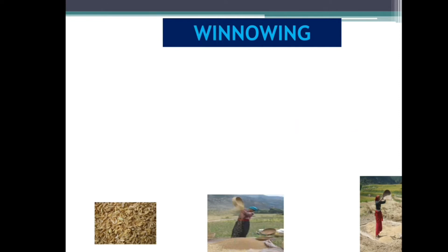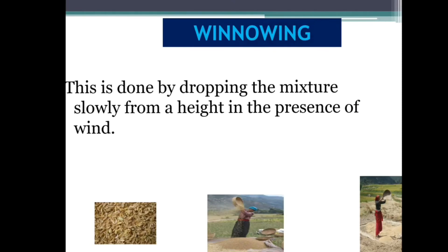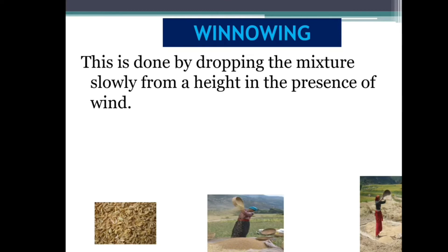Winnowing — when grains are collected from the process of threshing, they come with impurities like husks and chaffs. Husks are the outer part of the grain. Winnowing is done by dropping the mixture slowly from a height in the presence of wind. The lighter particles are carried by the wind and fall apart as a separate heap.